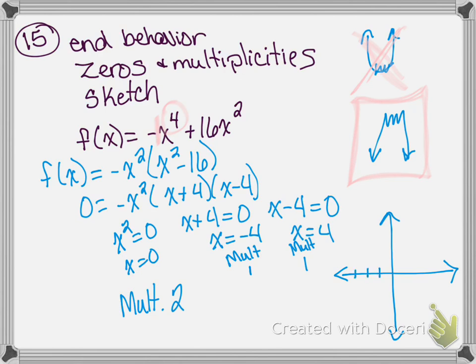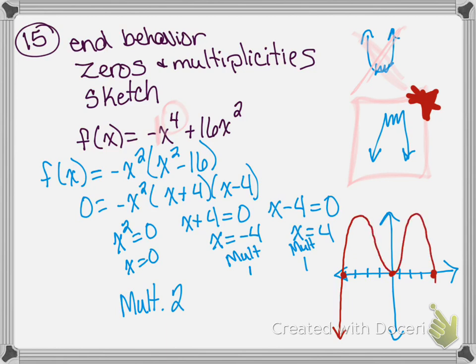When we graph this, we know we are going to cross at negative 4 and 4 — each of those has a multiplicity of 1, so we cross at those points. The graph comes down from the left, goes up, touches and bounces at zero (multiplicity 2), then comes back down and crosses at 4 on the right. We cross at negative 4 and positive 4 because the multiplicity of each is 1, and we touch and change direction at zero because its multiplicity is 2.